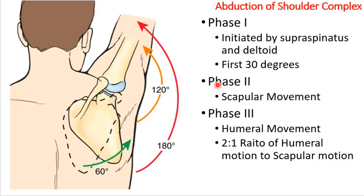The next slide looks at this synchronous movement — scapulohumeral rhythm. When you lift your arm over your head, which we do a lot in sport and daily activities, there's a sequence that's expected, though everyone's slightly different. This is referred to as humeral elevation, not necessarily abduction or flexion, because the end position of full shoulder flexion and full shoulder abduction is exactly the same — arm straight up over your head. The initiation is slightly different in phase one, but phases two and three are the same regardless.